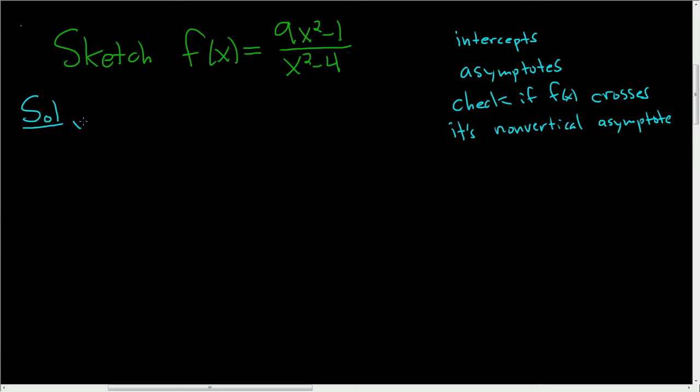Let's go ahead and find the intercepts first. To find the y-intercept, that's pretty easy. We just plug in 0. So f of 0, well when we do that, we get 9 times 0 squared minus 1 divided by 0 squared minus 4. So we end up with negative 1 over negative 4, which is 1 over 4.